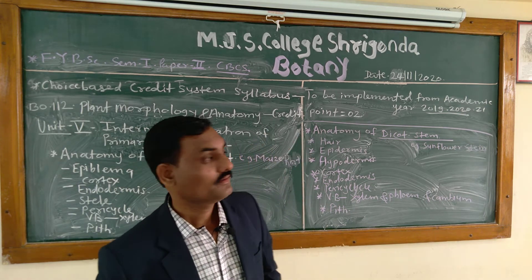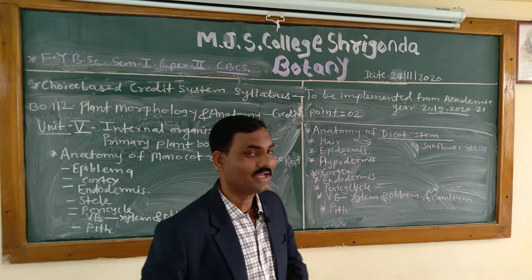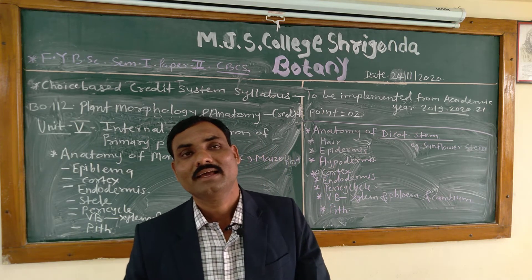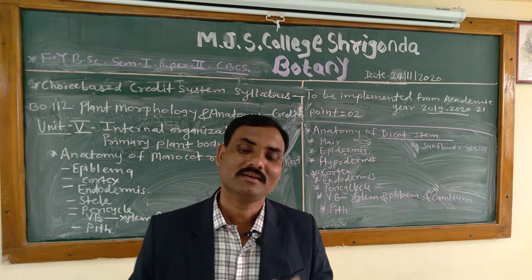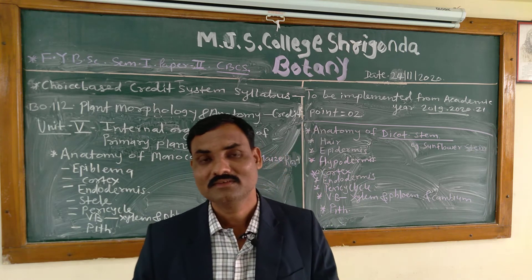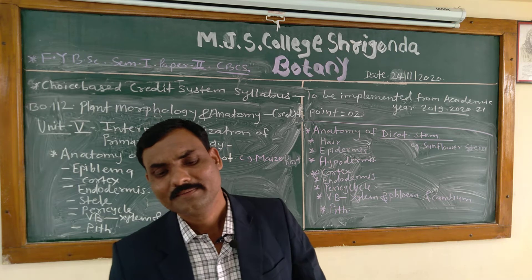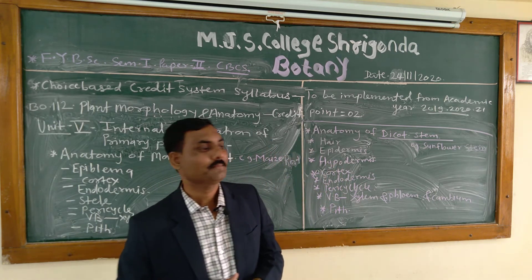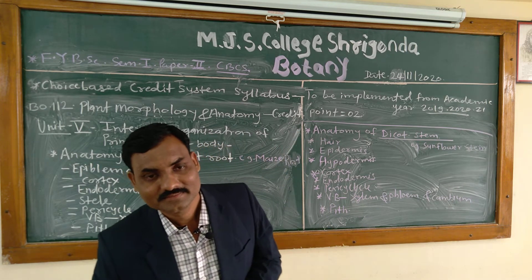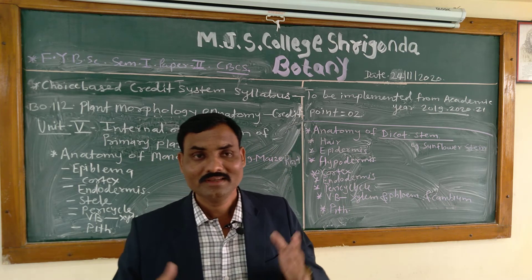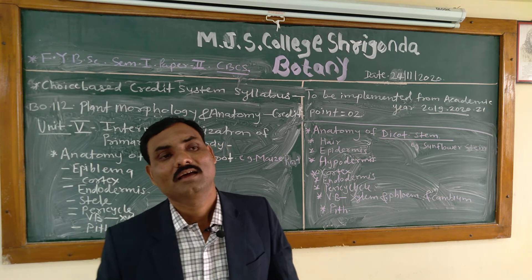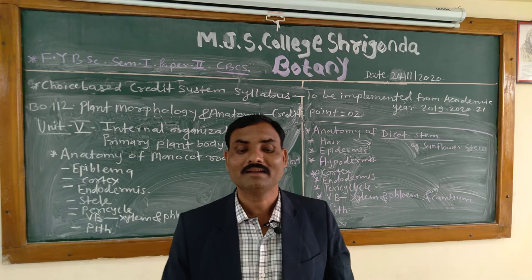Next we are going to learn about the anatomy of a dicotyledonous plant, taking the example of the sunflower stem. The botanical name of sunflower is Helianthus annuus. When we take a transverse section of the stem with a new blade, place it on a slide, stain it, and observe under a microscope, different parts are visible.